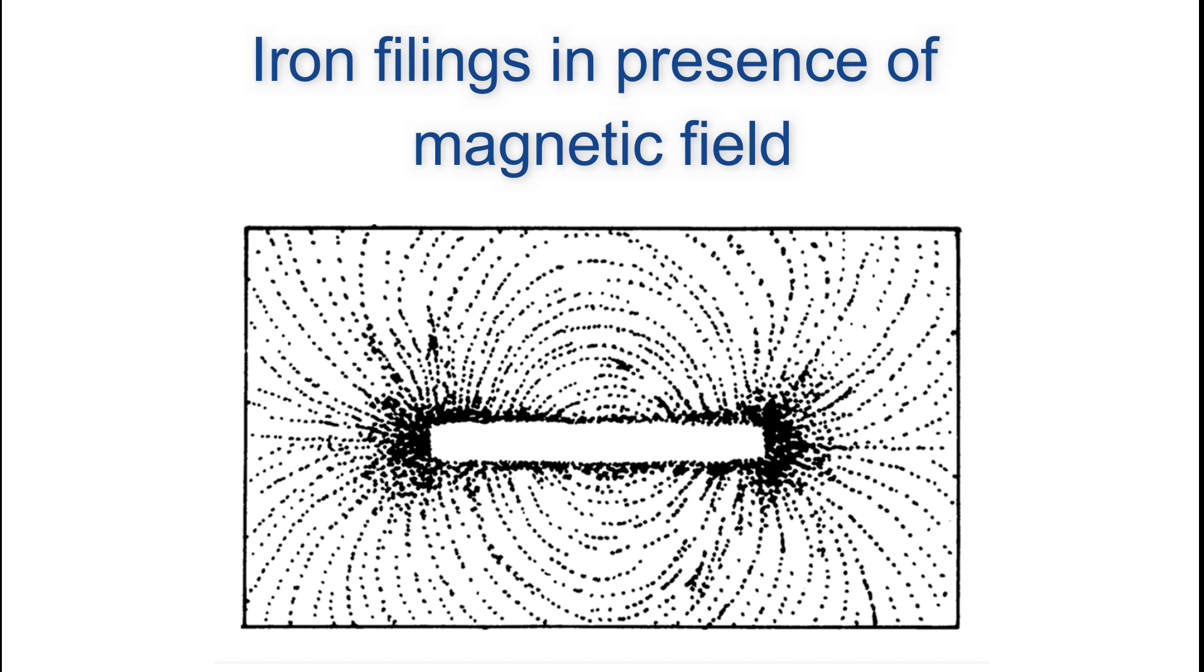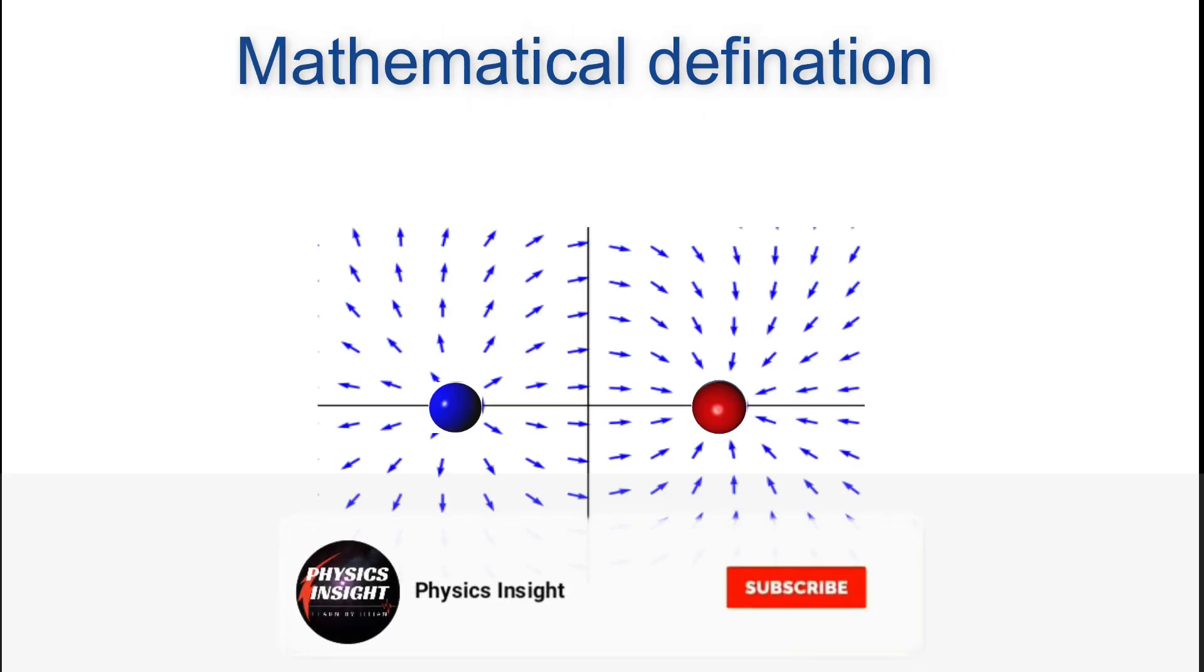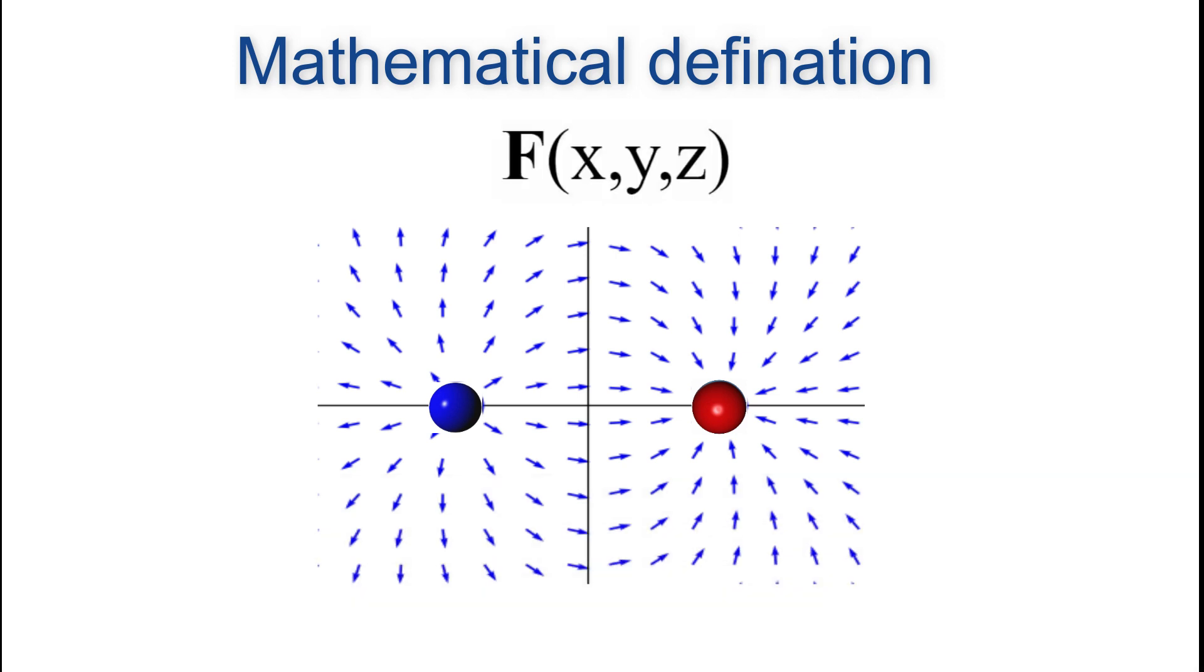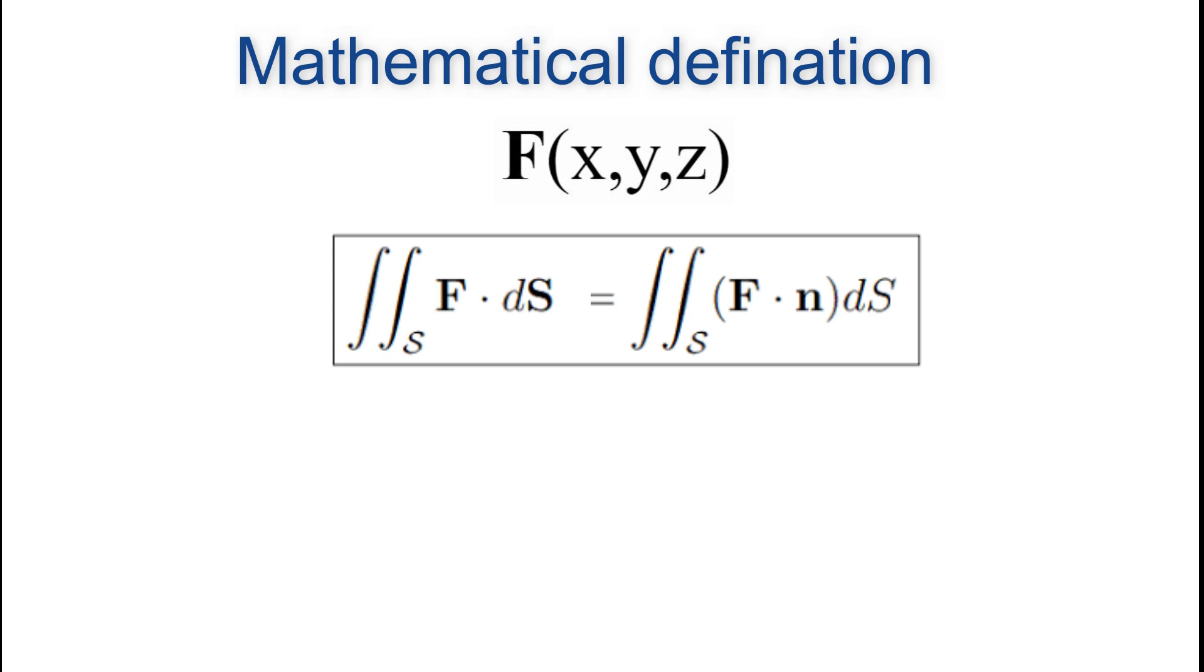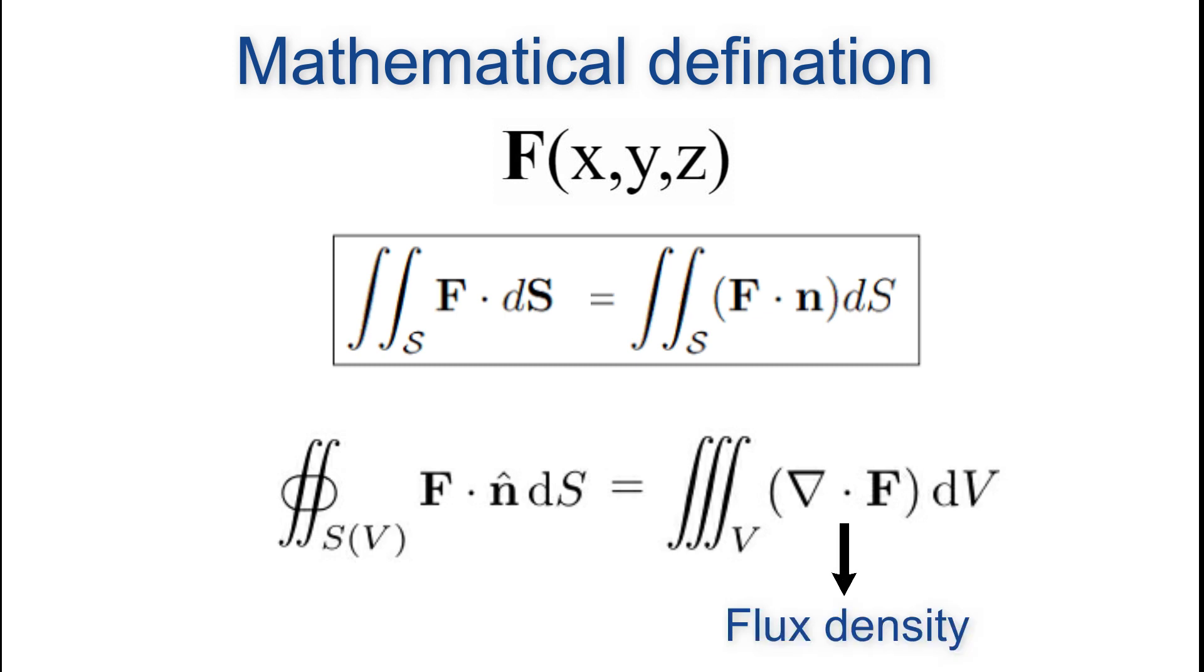Again coming to the mathematical definition of flux. Suppose the velocity of water in xyz space is described by vector field F as a function of xyz, and we need to calculate the flux through surface S. Then it is given as the surface integral of vector field F dot n cap, where n cap is the normal to the surface. Now we can rewrite this expression as a volume integral of divergence of vector field F using the divergence theorem. This expression also concludes that divergence of a vector field gives us flux density.